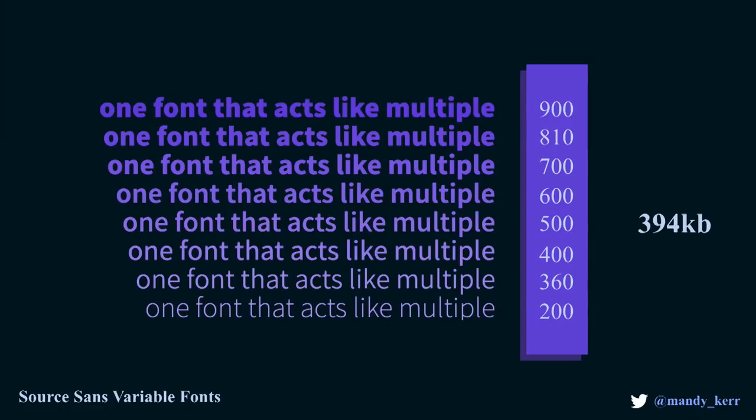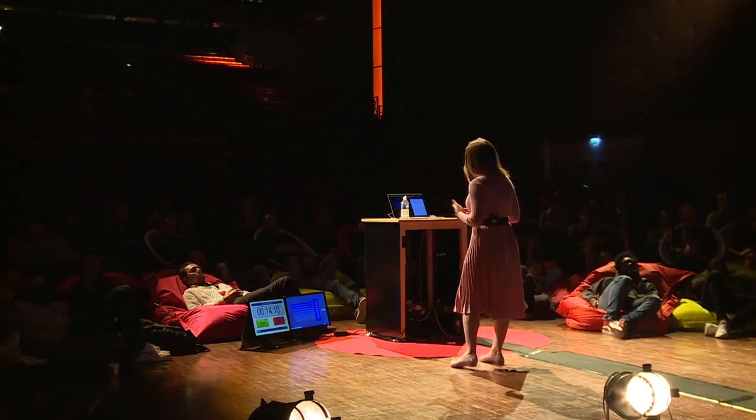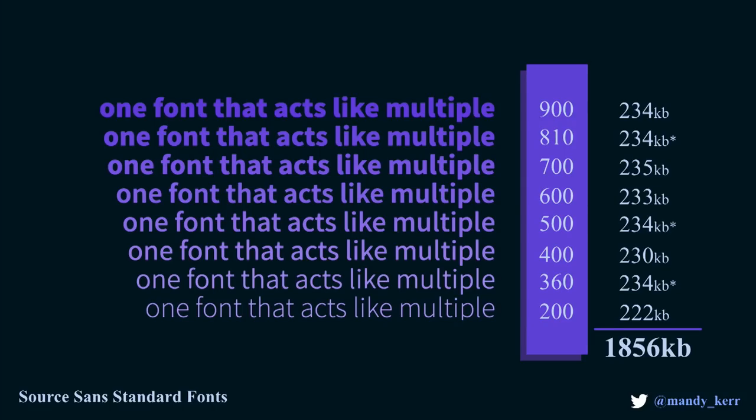If we were to use Source Sans Variable by Adobe as an example, this has a weight range of 200 to 900. In total, this comes to about 394 kilobytes. That seems like a lot, but Source Sans has a lot of characters and ligatures, so it's quite a comprehensive font. Now, if we were to compare this to the standard font weights that we have with Source Sans in its standard format, they're about 234 kilobytes per file. With just those weights — none of the extras in between that the variable font has — that's about 1,856 kilobytes worth of fonts.